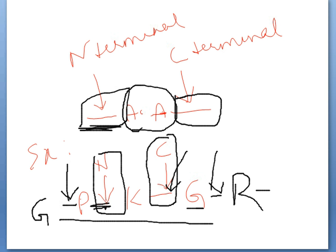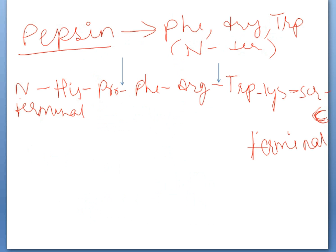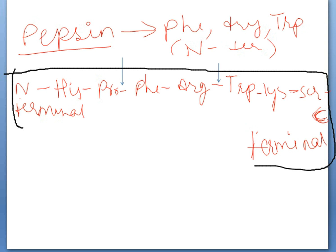Now, here is an example where pepsin is added to a mixture containing a peptide. We know that pepsin cleaves at phenylalanine, tyrosine, and tryptophan towards the N-terminal. Scanning the peptide: phenylalanine is present here, so its N-terminal bond is targeted. There is no tyrosine. Tryptophan is present here, and pepsin targets the N-terminal of this tryptophan.